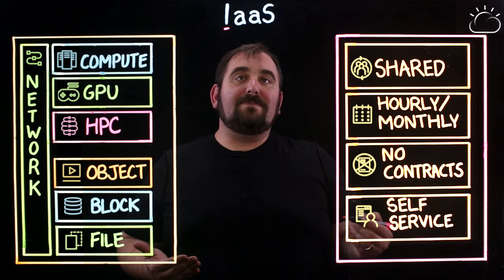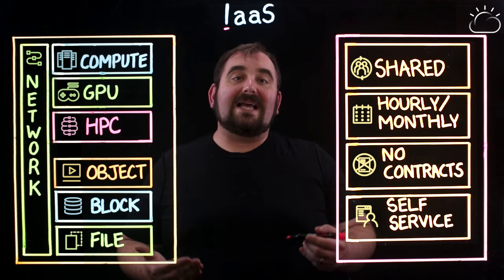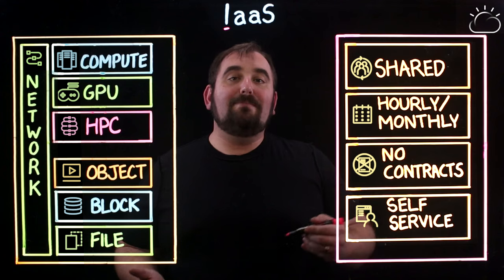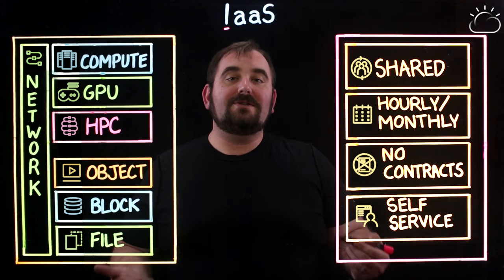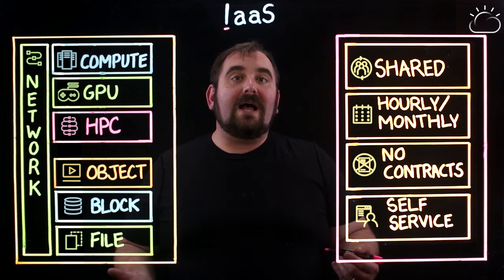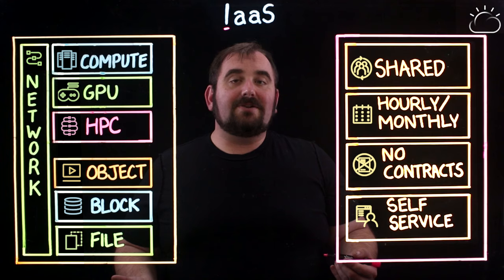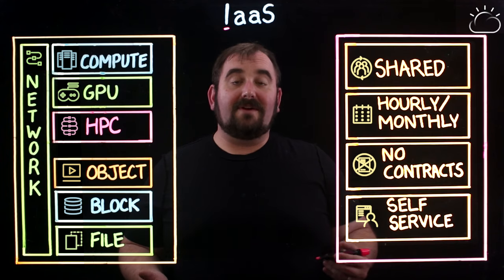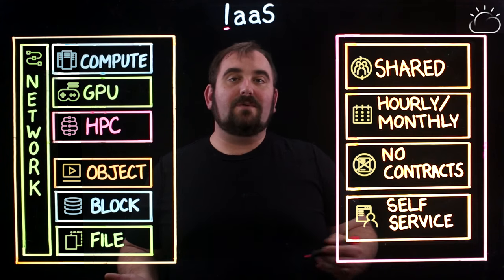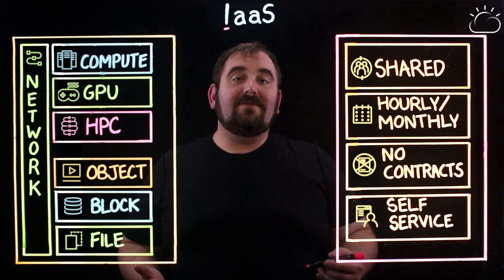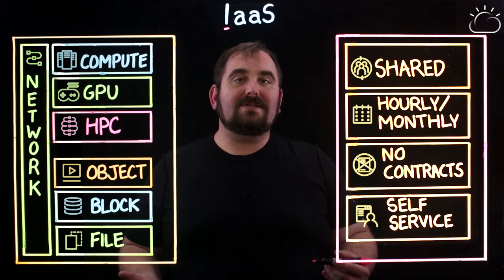The 'aaS' piece is 'as a service' — that's the billing method, that's the way that you consume it. And there are other kinds of as a service: you've got PaaS, platform as a service; you have SaaS, software as a service. There are lots of different kinds of things that you can consume as a service.